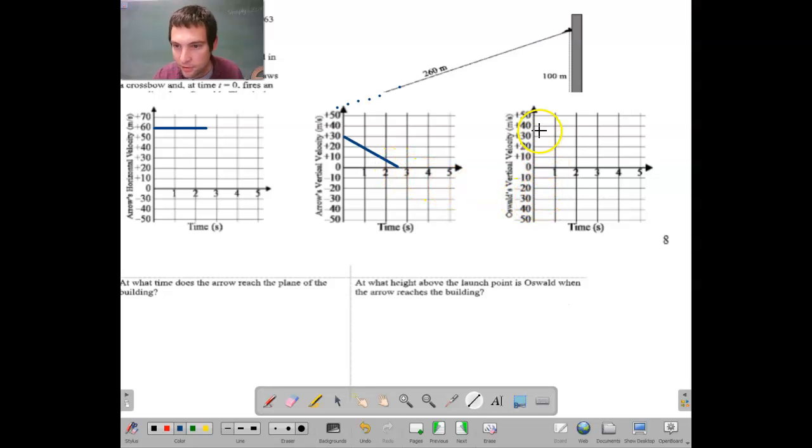And then the vertical velocity for Oswald started off from rest. And then 2.5 seconds later it's going to be at 25. How do I know it's going to be at 25? It's 2.5 seconds later and there's a slope of negative 10. So you can use the graph. That's it.